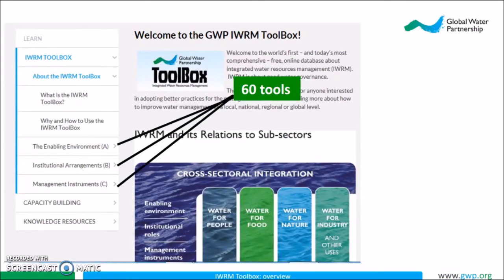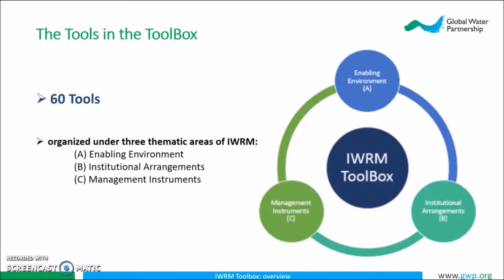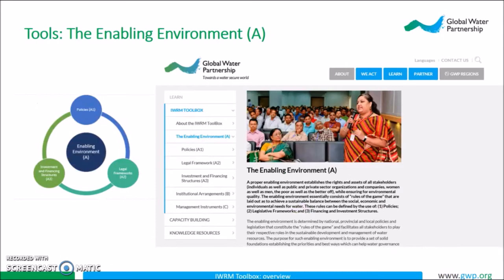Now we'll look at the 60 tools that make up the toolbox. The tools provided are organized under three thematic areas of IWRM: the enabling environment, institutional arrangements, and the management instruments. The first set of tools are under the enabling environment. This toolset is what establishes a foundation for better water governance. The policies, legal framework, and investments and financing structures of a place set the stage for how water resources are managed.